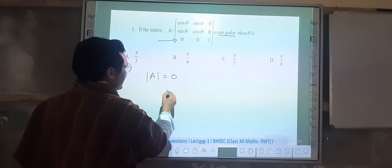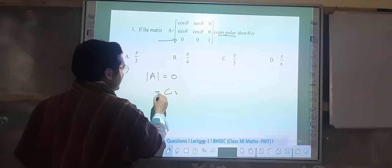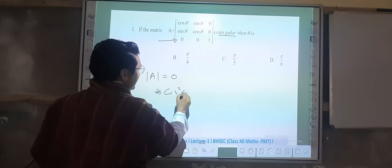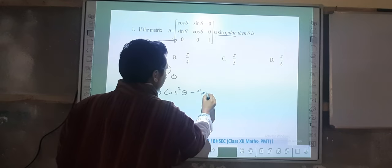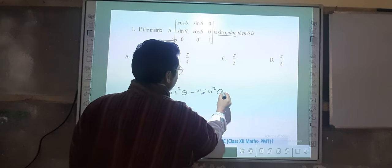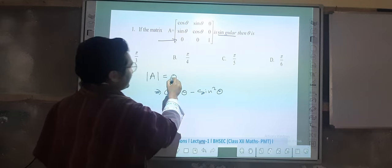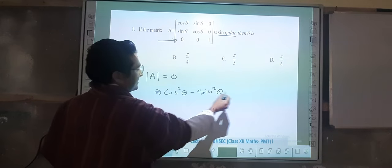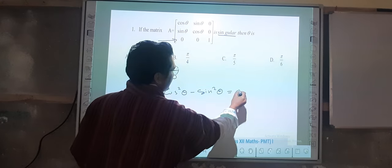cos theta times cos theta is cos squared theta minus sine squared theta. And since for a singular matrix the determinant is equal to zero, this is equal to zero.